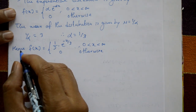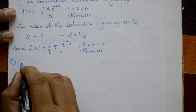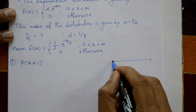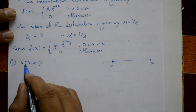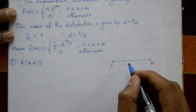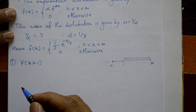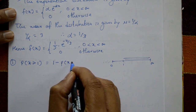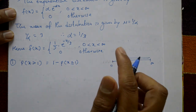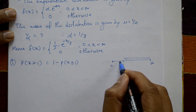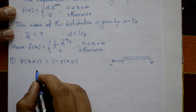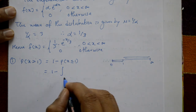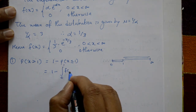Case 1: Find the probability of X greater than 1. Since f(x) is defined on 0 to infinity, P(X > 1) requires the area from 1 to infinity. It is easier to calculate as 1 minus P(X ≤ 1), which equals 1 minus the integral from 0 to 1 of f(x) dx.